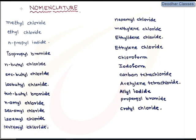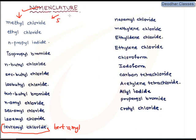Now let's have a revision of nomenclature. We have already discussed the common name system as well as the IUPAC system for halogen derivatives — alkyl halides. A few common names are listed. You are asked to draw the structures from these common names and then assign the correct IUPAC names. The last name in the list, which is not clearly visible, is tert-amyl chloride. As homework, draw the structures from the common names and assign the IUPAC names.